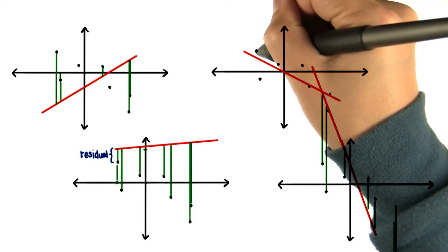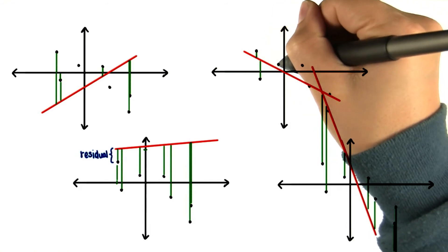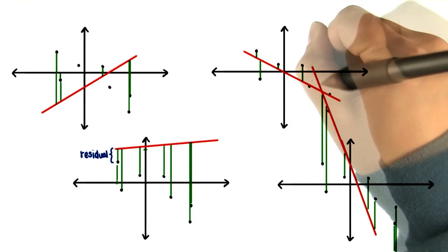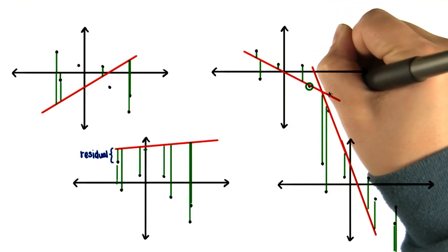But here, the residuals are pretty small, especially compared to the other possibilities. For these two points, the residuals are about zero.